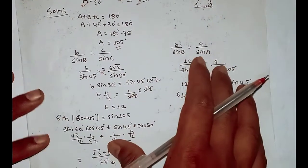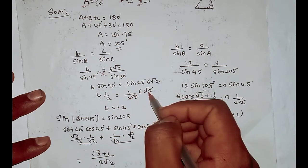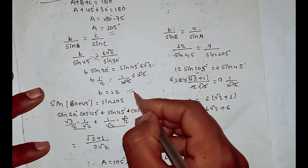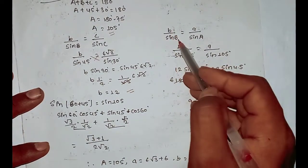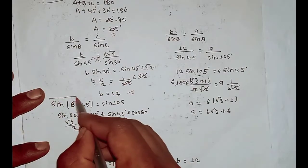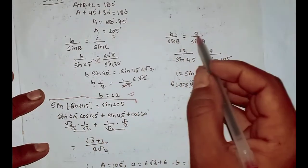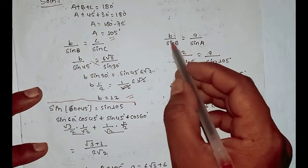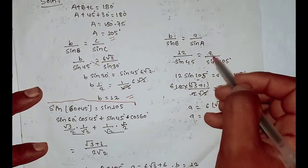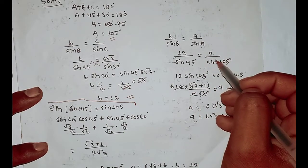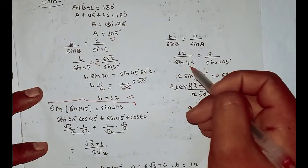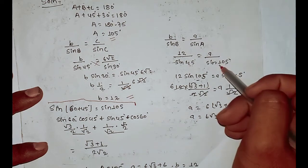The root over 2 terms cancel out, simplifying the expression. Sin 45 value is applied and the calculation proceeds.